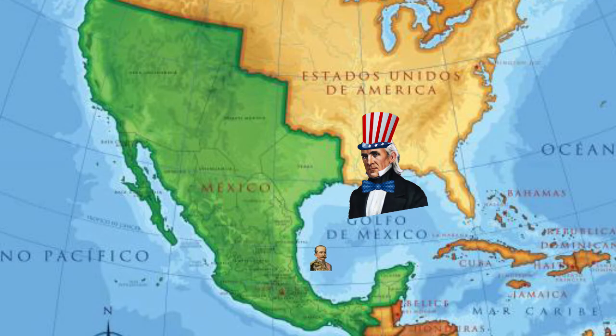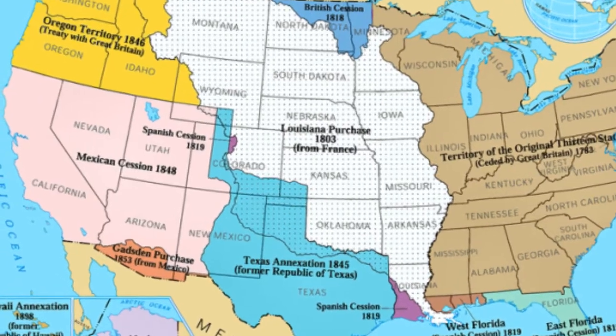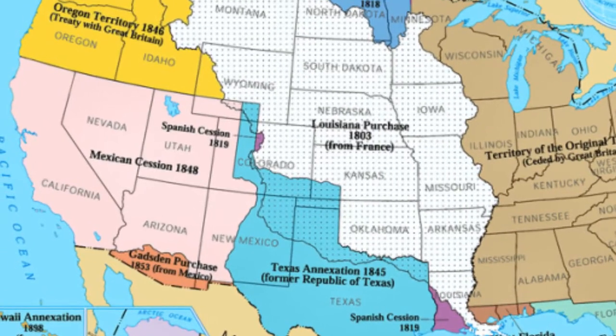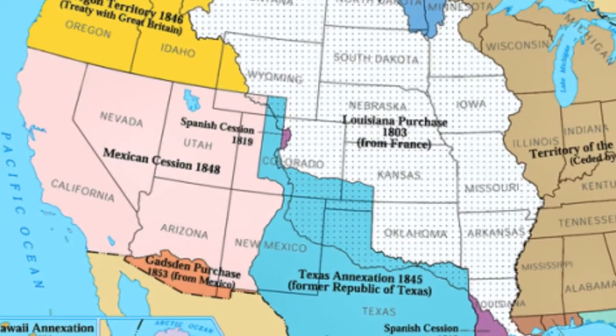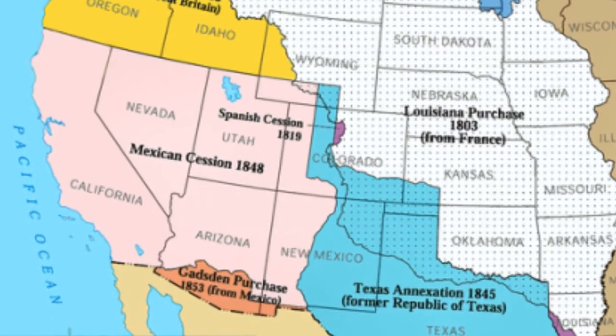Territories annexed by the United States during the Treaty of Guadalupe include California, Nevada, Utah, and parts of Arizona.